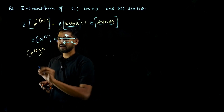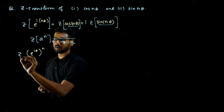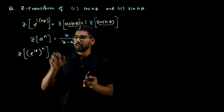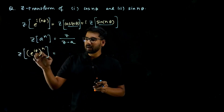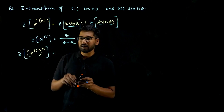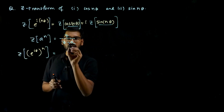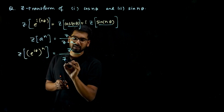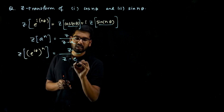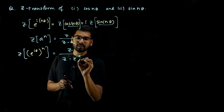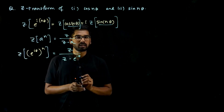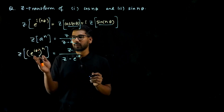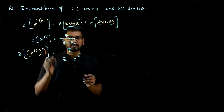I can write e^(inθ) as (e^(iθ))^n. So if I take the Z-transform of this, I treat it as a^n with a = e^(iθ). Therefore, substituting into z over (z minus a), I get z over (z minus e^(iθ)). I've now obtained the Z-transform of the left-hand side.